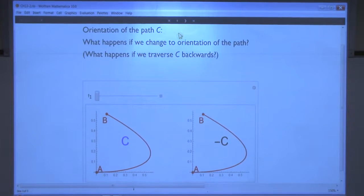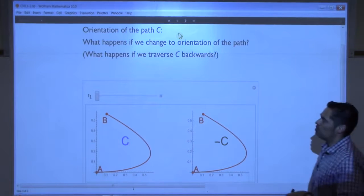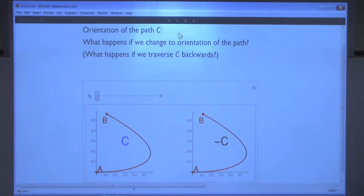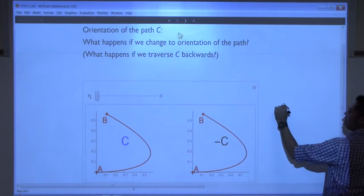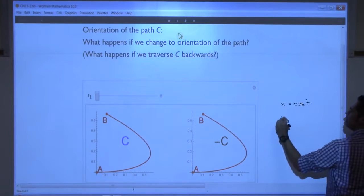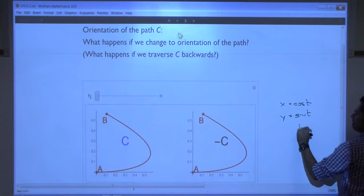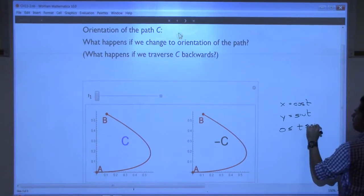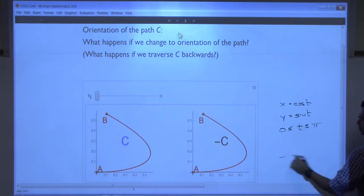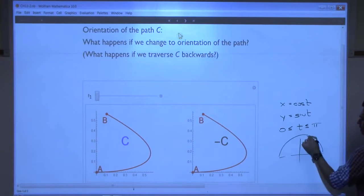Orientations of paths. What happens if we change the orientation of a path? In other words, what happens if we traverse the path backwards? Like when we were drawing that, the one I've been doing for a few examples now. Cosine t, sine t. Right? And t being from zero to pi. Then that drew this upper half and it drew it in that direction. Right? Start at zero, go.